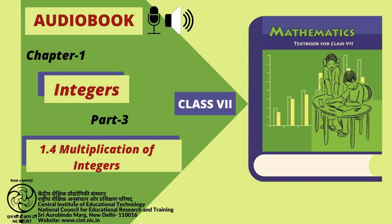In general, for any two positive integers a and b, we can say: a multiplied by minus b is equal to minus a multiplied by b, which is equal to minus (a multiplied by b).